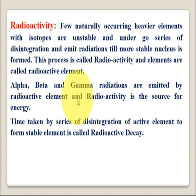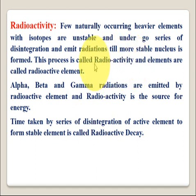Radioactivity is an important property of heavier nuclei elements. A few naturally occurring heavier elements with isotopes are unstable and undergo a series of disintegrations, emitting radiations until a more stable nucleus is formed. An example is natural uranium. This process in which the heavy nucleus disintegrates to form different nuclei is called radioactivity, and the elements are called radioactive elements. During the process of decay, various radiations are emitted, such as alpha, beta, and gamma, which are very harmful to human beings and plants.